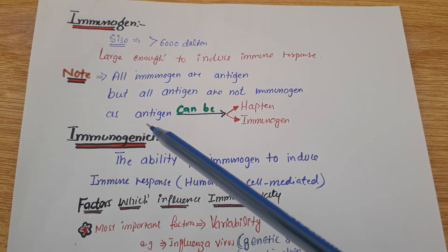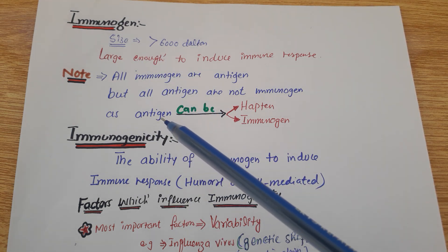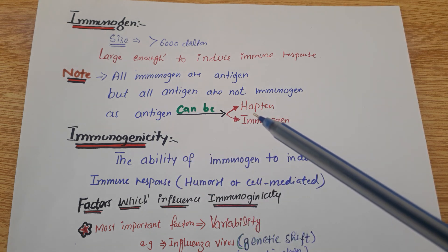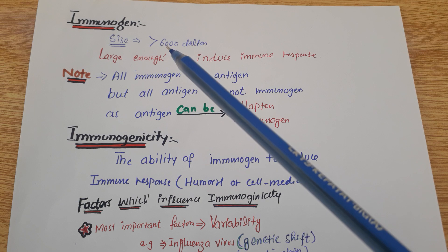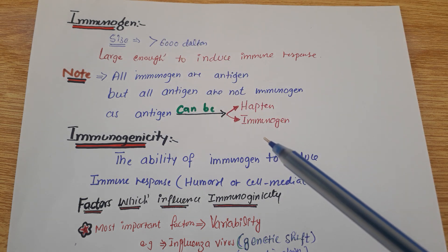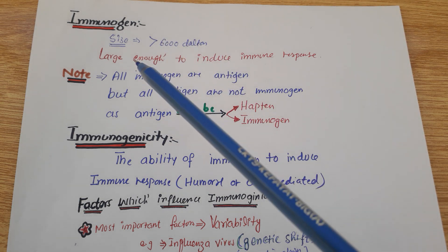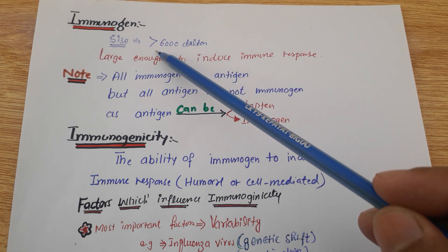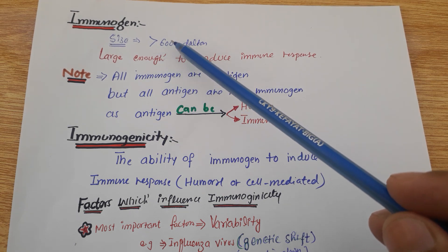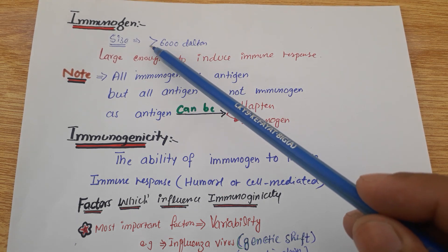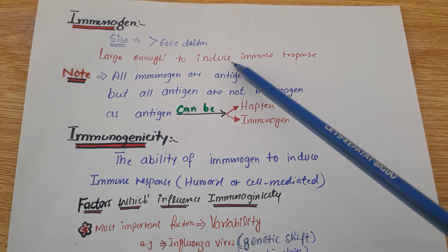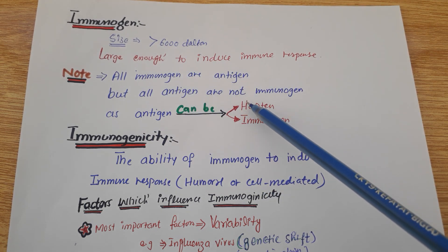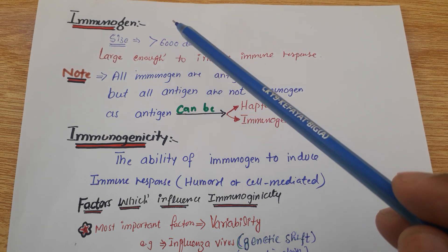As I already explained in the last video, an antigen can be a hapten or an immunogen. The hapten size is going to be less than 6000 Daltons, but the immunogen size is going to be more than 6000 Daltons. This large size of the immunogen is enough to induce the immune response, so you have to remember this.